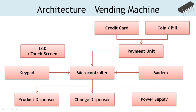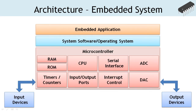In general, an embedded system can be modeled as shown in the diagram. A microcontroller is the brain of the system. Depending upon the complexity of the tasks handled, a varying degree of sophisticated microcontroller is employed in an embedded system. For example, a digital camera uses a 32-bit microcontroller, whereas the front panel of a washing machine uses a microprocessor of a smaller word size.